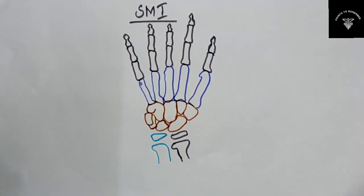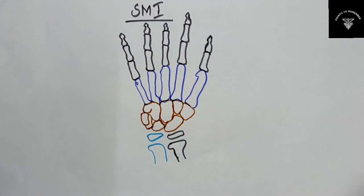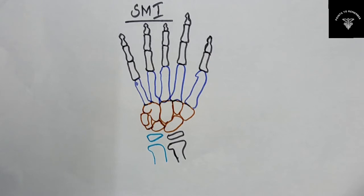Hello everyone, welcome to my channel. Today we are going to see about the skeletal maturity indicators — mainly about the Fishman's skeletal maturity indicators. Hand-wrist radiographs are used to assess skeletal maturity, and there are many methods. The most commonly used method is the Fishman's skeletal maturity indicators.